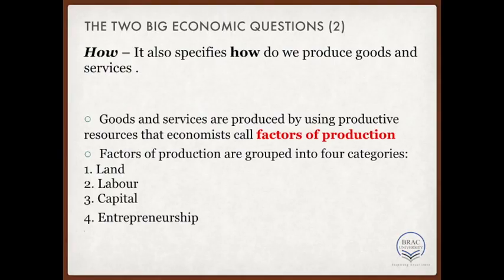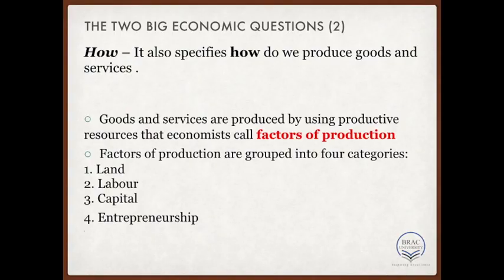Land is what we call our natural resource, and we need this at the very first to produce whatever we are wishing for. Second, labor — we need people to devote time and their energy to produce the goods and services that we desire. Without a labor's physical and mental effort, nothing is possible to be produced. And then we have capital — these are the tools, instruments, and machines we need to produce something. Note, sometimes we say capital as money or bonds or shares in everyday language, but those are financial capitals. The capital we are talking about here are basically the tools and machines and instruments that we use for productive purposes only.